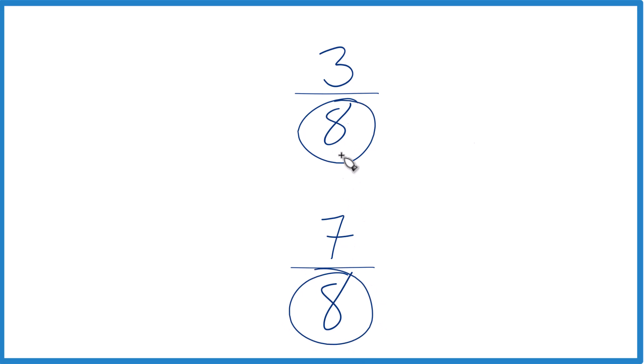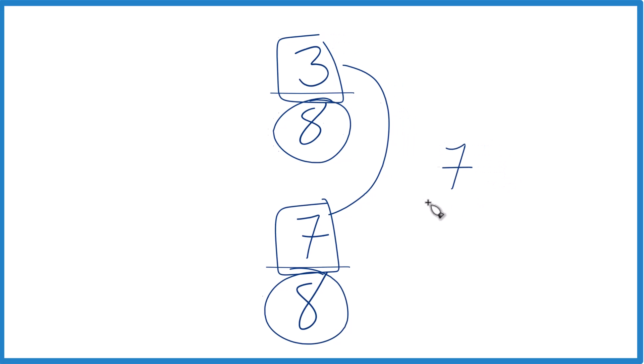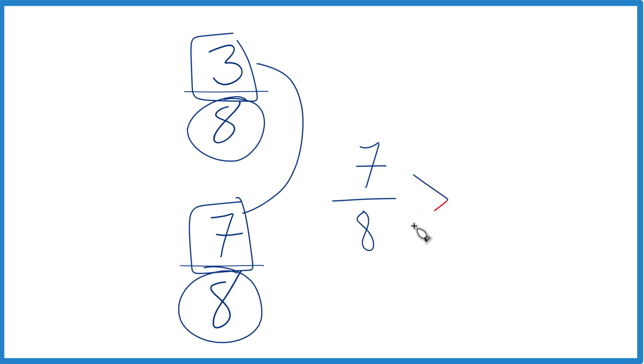We have the same denominator. If the denominator is the same, we can just compare the numerators - compare 7 and 3. Which one's greater? Since 7 is greater than 3, we can say that 7/8 is greater than 3/8.